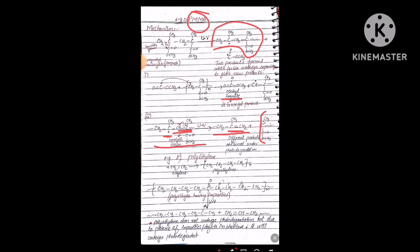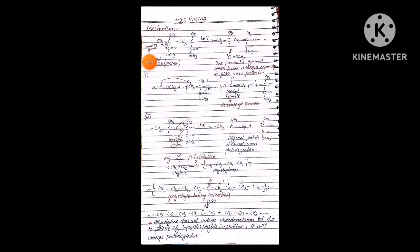Now we will see photo-degradation in another example: polyethylene. Ethylene monomers, when taken in n numbers, polymerize to give the polyethylene polymer. The interesting point is that polyethylene does not ordinarily undergo photo-degradation. The reason is that in polyethylene there is no carbonyl functional group (C=O) present under normal conditions.